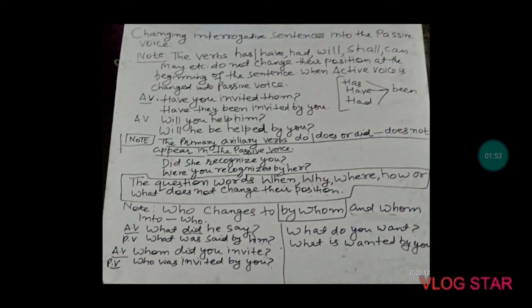Since 'they' is the object form, it stays. After 'have/has' or 'had', we use 'been'. So the sentence becomes: 'Have they been invited by you?' — 'invited' is the third form. Also, 'Will you help him?' becomes 'Will he be helped by you?'